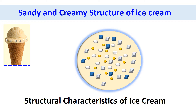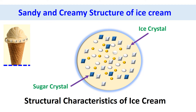Ice cream could have a sandy mouthfeel if the size of the ice crystals is large, or due to the presence of sugar crystals. The ice crystal size can be controlled during ice cream making through temperature, mixing, and ingredients, and also by controlling appropriate storage conditions.